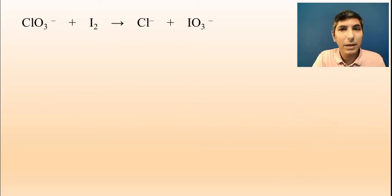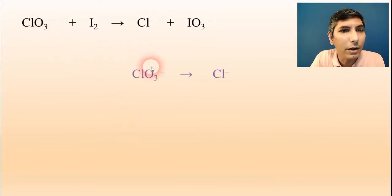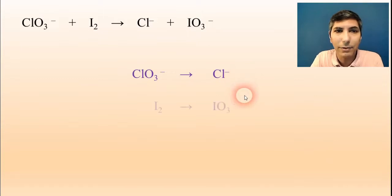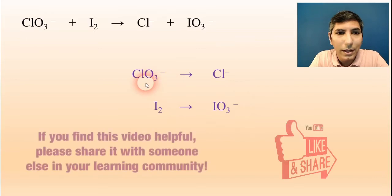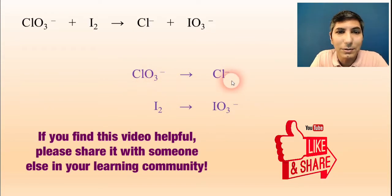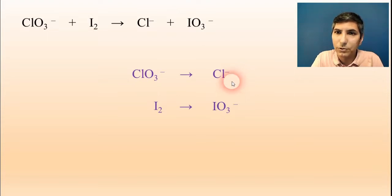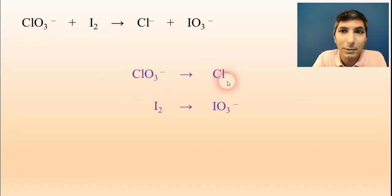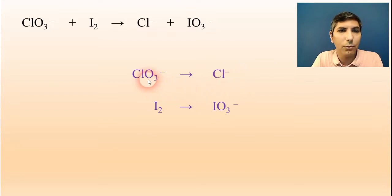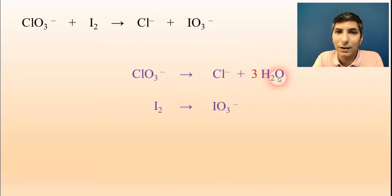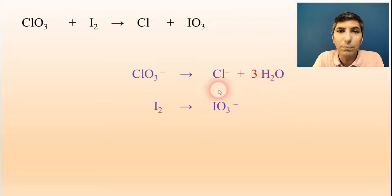Let's take a look at another example. In this case we have a skeleton redox reaction, and we need to separate it into half reactions. In the first half reaction we have the chlorine process, and in the second we have the iodine process. The chlorate ion is being turned into the chloride ion. The first step — balance everything except hydrogen and oxygen — is already done since there's one chlorine on both sides. We have three oxygens on the left and none on the right, so I add three water molecules to the right side. To balance those hydrogens, 3 times 2 is 6, so I add six H+ ions to the left side.